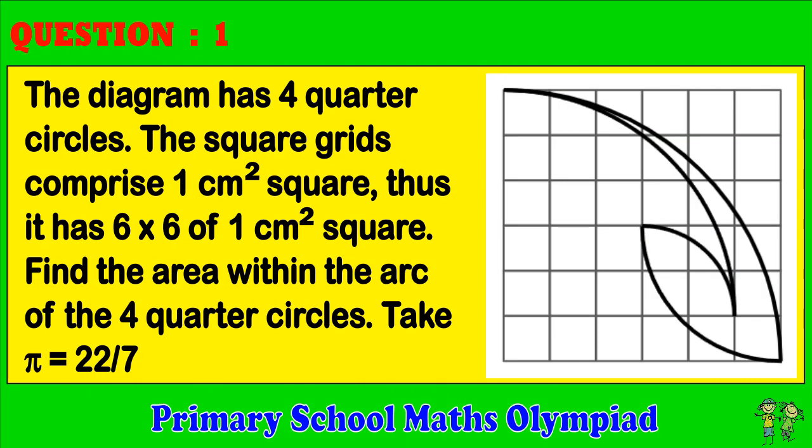Question 1: The diagram has four quarter circles. The square grids comprise one centimeter squared square, thus it has six by six of one centimeter squared square. Find the area within the arc of the four quarter circles. Pi equals 22 over 7.